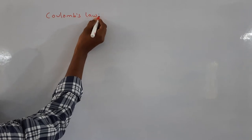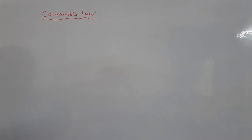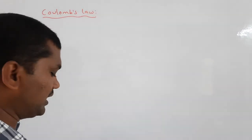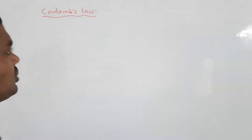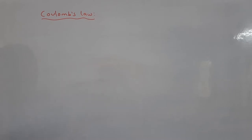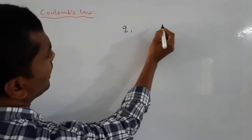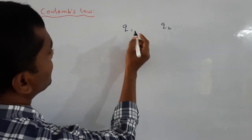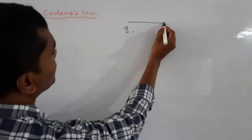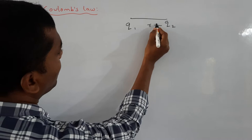In Coulomb's law, we consider different types of electric charges. The electric charge is represented by small q. We take two different types of charges, represented by q1 and q2. These two different charges are separated by a distance represented by small r.